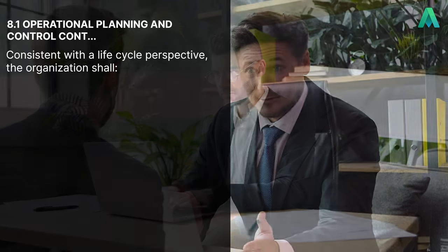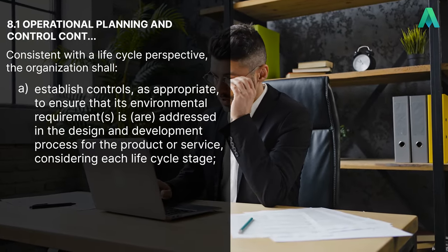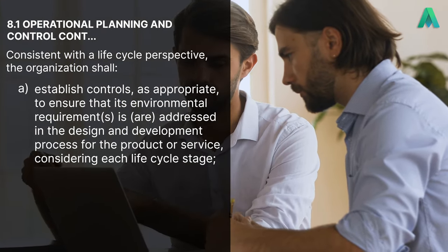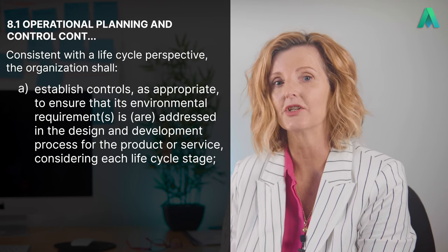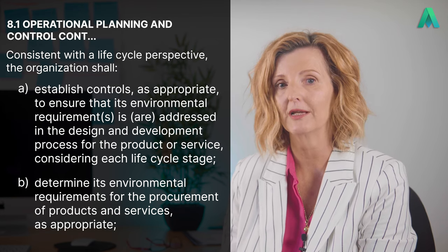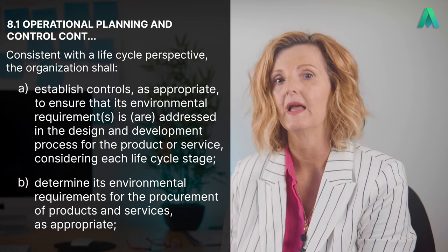The next section of this clause states that consistent with a life cycle perspective, the organisation shall: A, establish controls as appropriate to ensure that its environmental requirements are addressed in the design and development process for the product or service, considering each life cycle stage; and B, determine its environmental requirements for the procurement of products and services as appropriate. This means that controls regarding environmental impact need to be considered right from the beginning of the life cycle — at the design stage, as well as when purchasing any products and services for the provision of your own products.